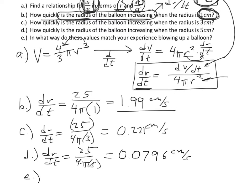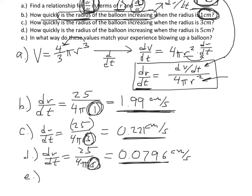Part E asks: in what way do these values match your experience blowing up a balloon? Have you noticed that when blowing air into a balloon, in the beginning — when the radius is really small — the radius expands really fast? And as the balloon gets bigger, it grows more slowly. Once it's really big, you could blow a huge lungful of air in and the radius barely grows. Just because the volume is changing at a constant rate of 25 cubic centimeters per second doesn't mean the radius is also constantly growing at the same rate.